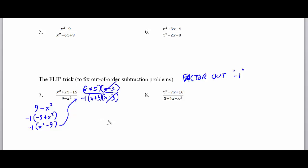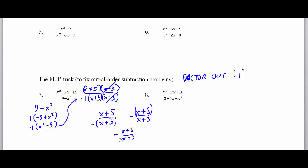So negative 1 is being multiplied by (x plus 3)(x minus 3). We simplify the x minus 3's, leaving x plus 5 in the numerator and x plus 3 in the denominator, with that negative 1 to handle. I've seen students write the answer with a negative in front without a 1 — that's allowable. Most textbooks encourage putting the negative out in front of the problem. As long as that negative is present, you're going to be okay.